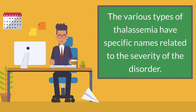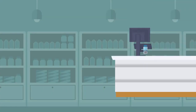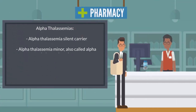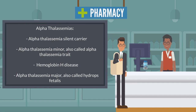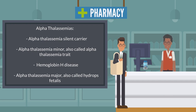The various types of thalassemia have specific names related to the severity of the disorder. Alpha-thalassemias: Alpha-thalassemia silent carrier, alpha-thalassemia minor (also called alpha-thalassemia trait), hemoglobin H disease, and alpha-thalassemia major (also called hydrops fetalis).